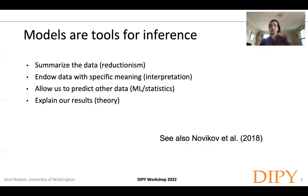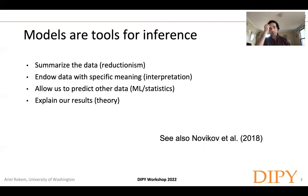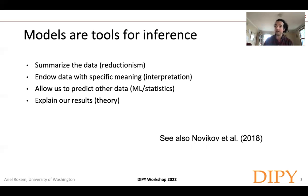What are models for generally? Models are tools for inference. They allow us to make inferences about the data through a variety of perspectives. A model allows us to reduce and summarize the data, boiling many measurements down to a small number of parameters. Another perspective is that the model endows data with specific meaning — it gives us an interpretation of the data. A machine learning or statistics perspective says a model allows us to predict other data. And importantly, a model allows us to create a theory of the data and explain our results.